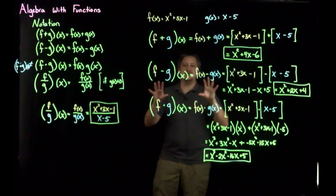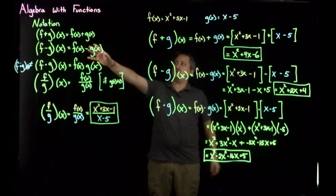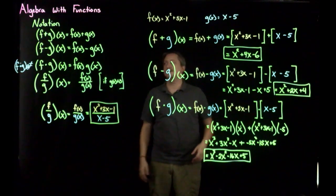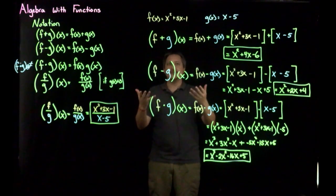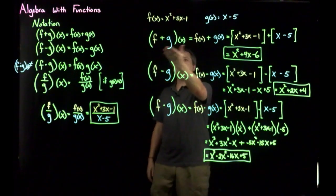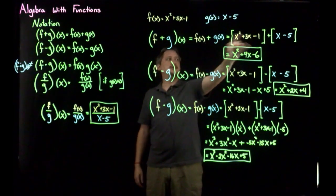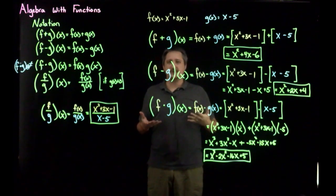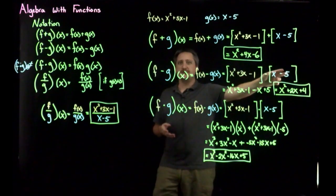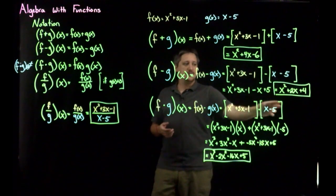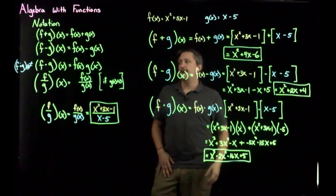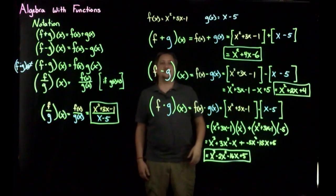That is algebra with functions in a nutshell: addition, subtraction, multiplication — not the same as composition — and division. They work pretty much how you'd expect; you just apply them individually, substitute, and simplify. The key caveat is to always use parentheses so you correctly distribute negatives. Otherwise, that is all there is to it.